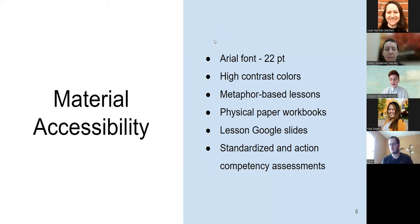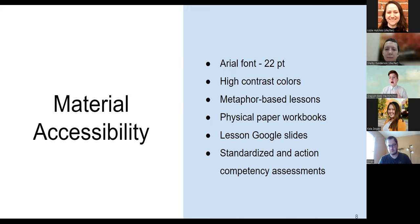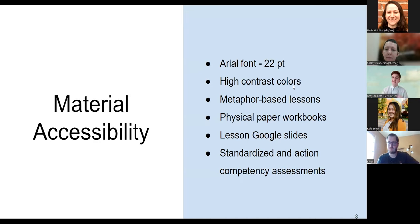We also wanted to touch on our material accessibility. We wanted to encapsulate a broad range of learners as well as different teacher styles. We made everything in Arial font with a 22-point size. We have very high contrasting colors in all of our Google Slides presentations. We also focus on metaphor-based lessons — instead of using a straight-up definition, we use a metaphor to explain the idea. For materials, we often have physical paperwork and books, but that varies. Sometimes we have Google Slides or just demonstrations. We also have standardized as well as action competency assessments.